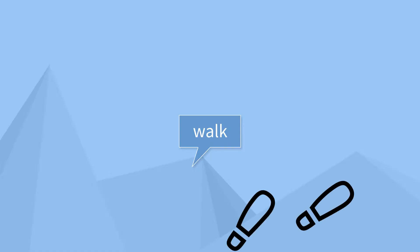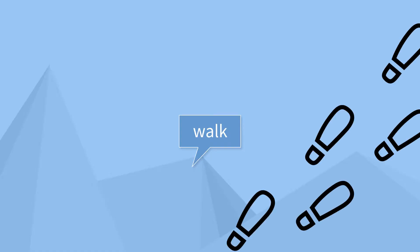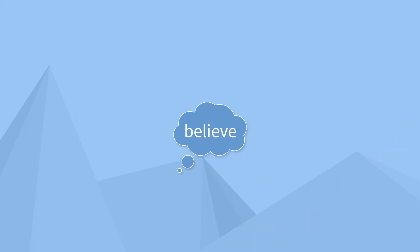Verbs can be actions — for example the word 'walk' — or they can be states. For example, the word 'love' is a verb, as is the word 'believe.' They're not things that involve any physical act or movement, but they are thoughts or feelings or emotions that a person can have. But if we just put a verb into a sentence then we have a problem, because actions and states don't exist on their own — they need to be done or thought or felt by someone or something.